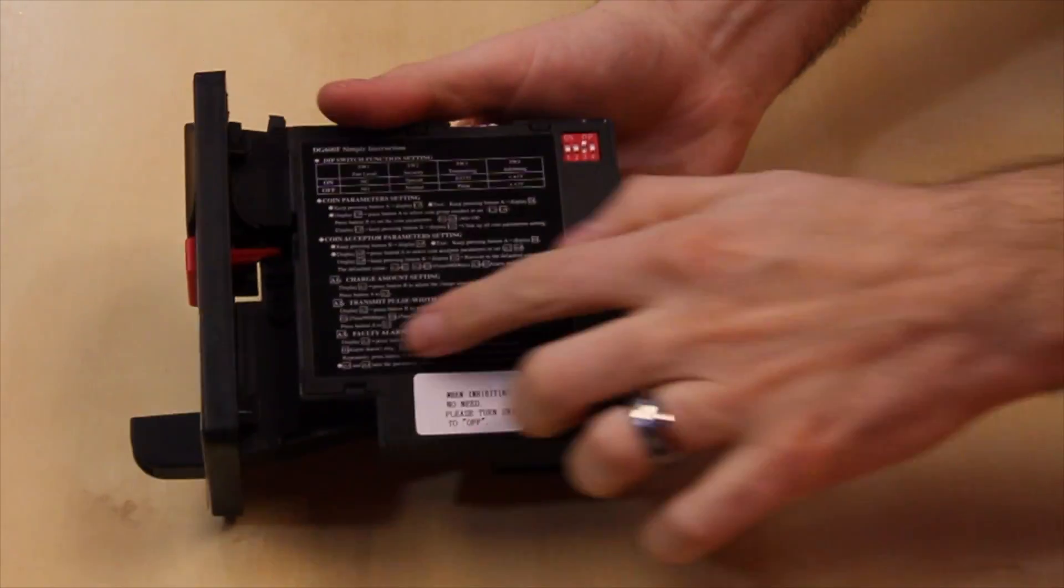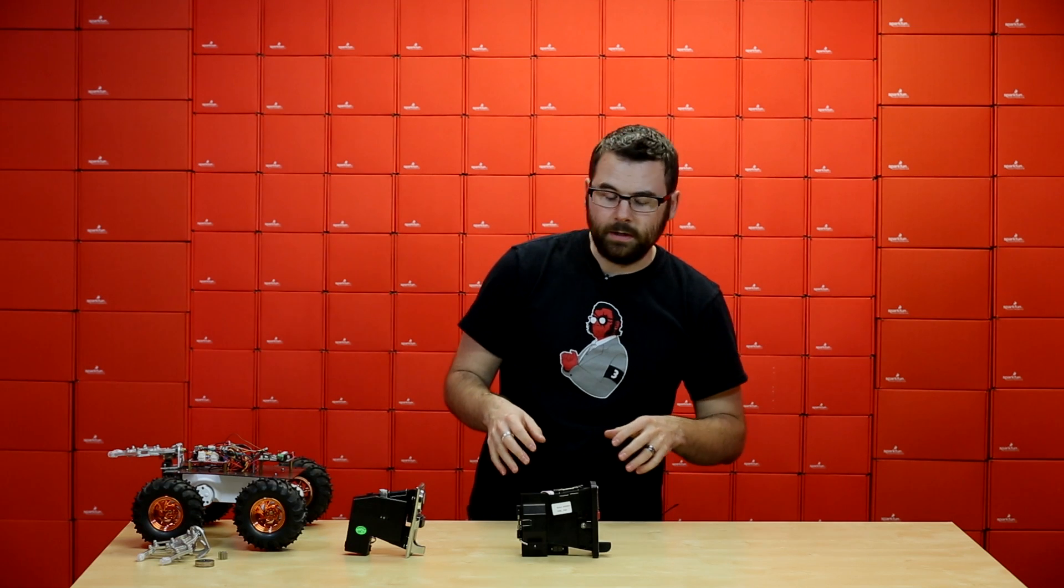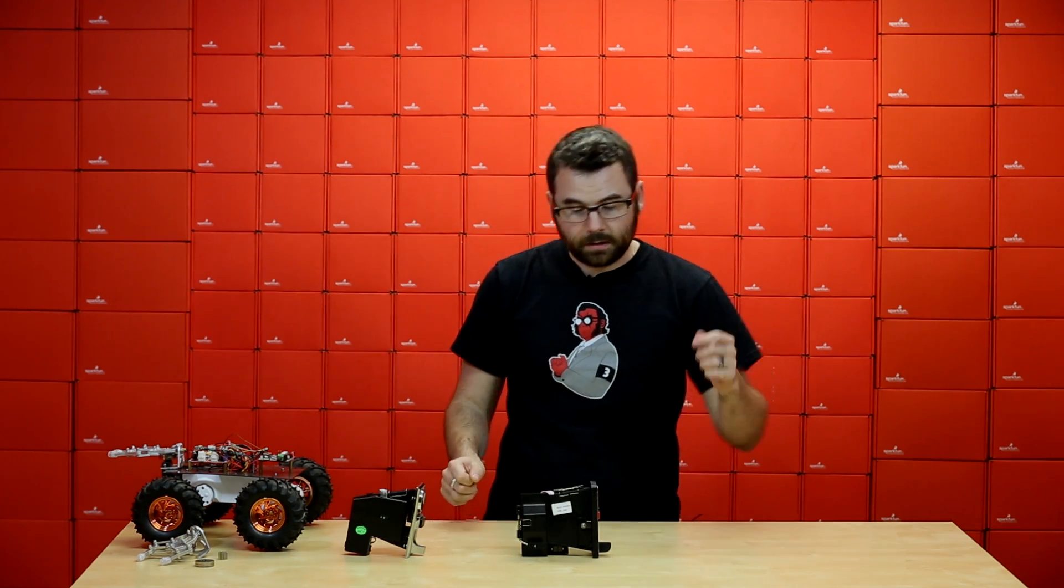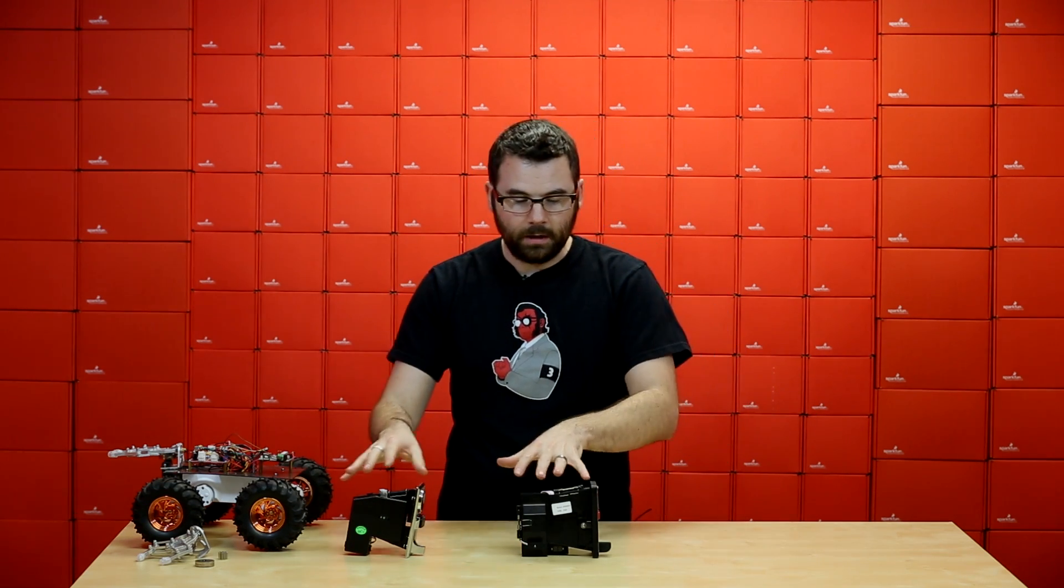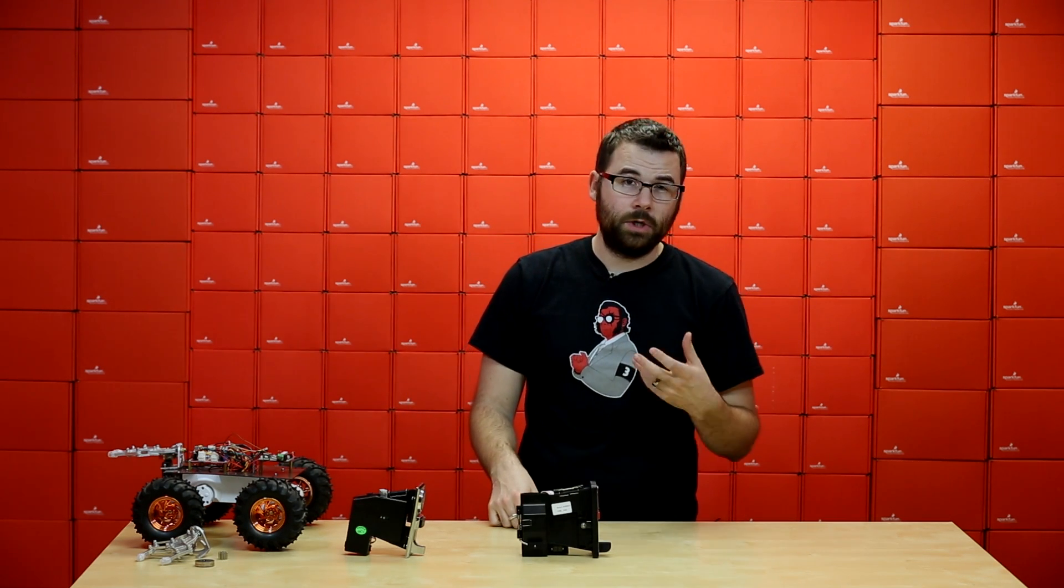It has these instructions here on the side of it. Basically for both of these, the programming method is that you take a coin and you basically put it through the slot about 20 different times while in the setup mode. And then it'll eventually recognize that as a coin.